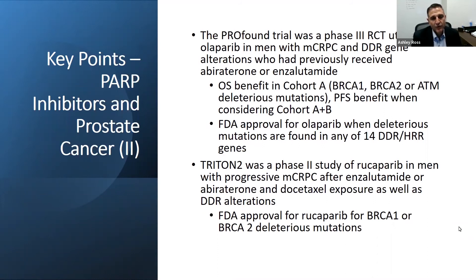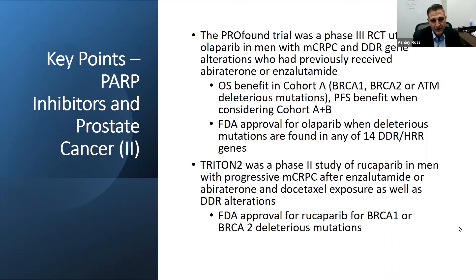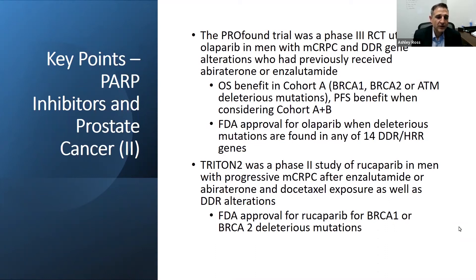To summarize: the PROFOUND trial was a phase three randomized control trial for men with metastatic castrate-resistant prostate cancer and homologous repair gene deficiencies, with two cohorts. Cohort A had deficiencies in BRCA1, BRCA2, or ATM, with an overall survival benefit and a progression-free survival benefit. Cohort B had other DNA damage slash homologous recombination deficiencies. When the FDA looked at cohorts A and B together, there was a PFS improvement, so they approved Olaparib for anyone with a deleterious mutation in one of those 14 genes. Triton 2 was a phase two study of Rucaparib that led to accelerated FDA approval for men with deleterious BRCA1 or BRCA2 mutations who had progressed through Abiraterone, Enzalutamide, and chemotherapy.